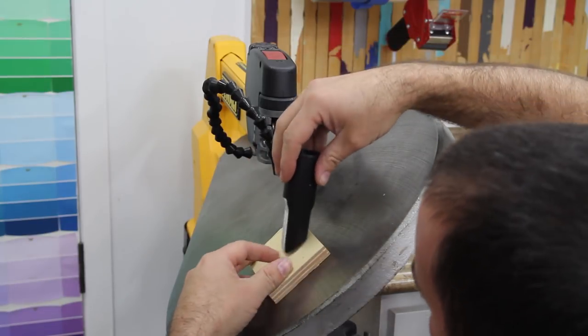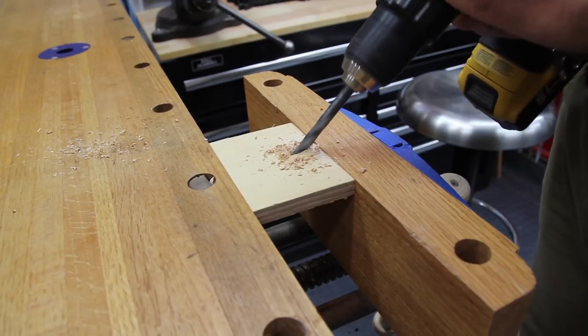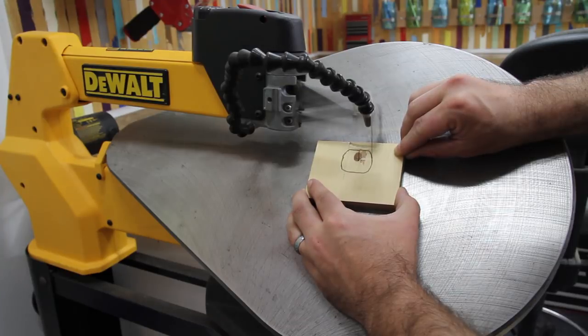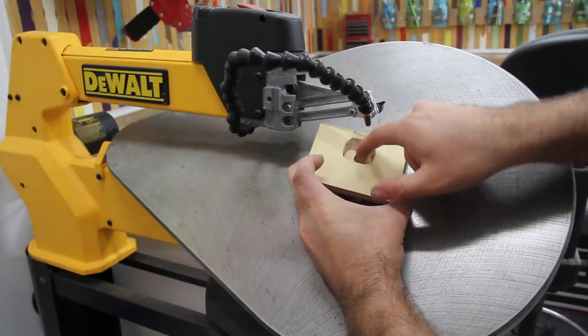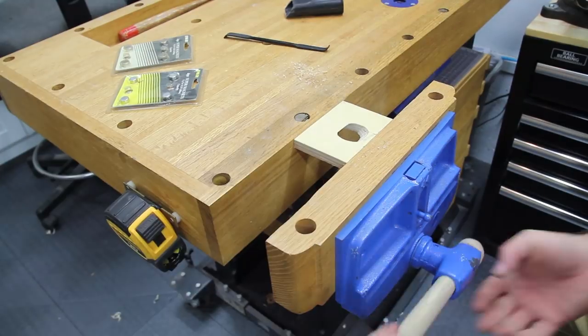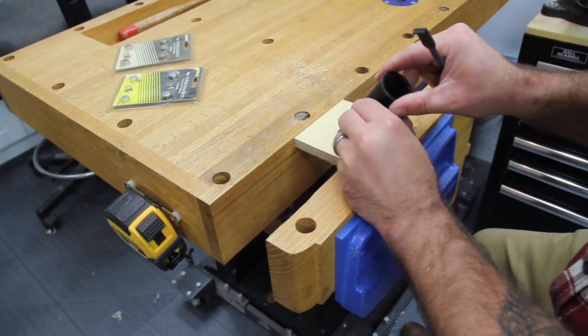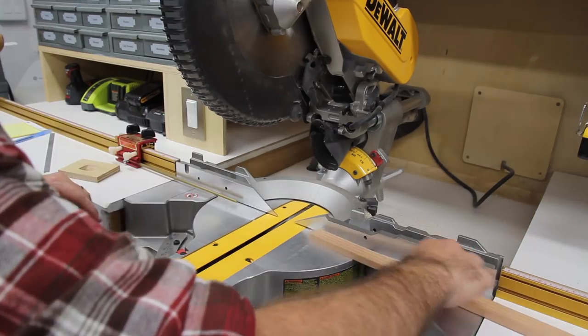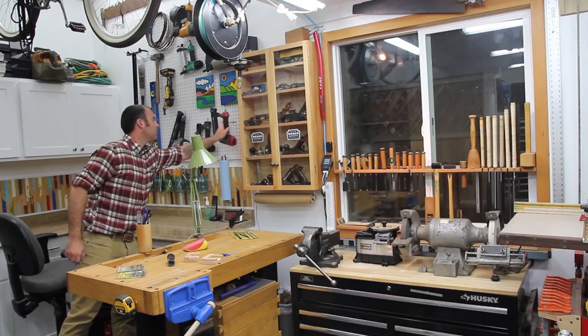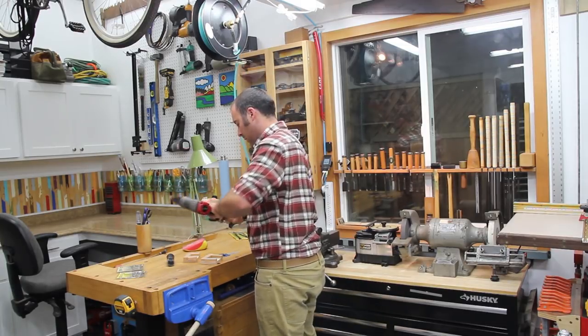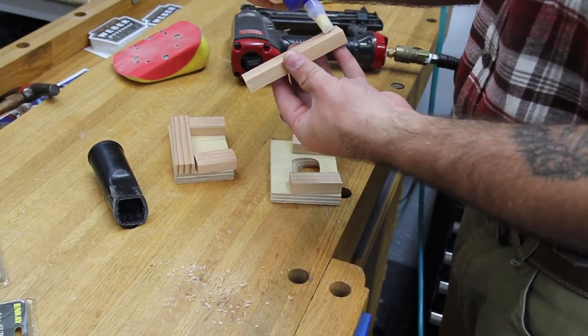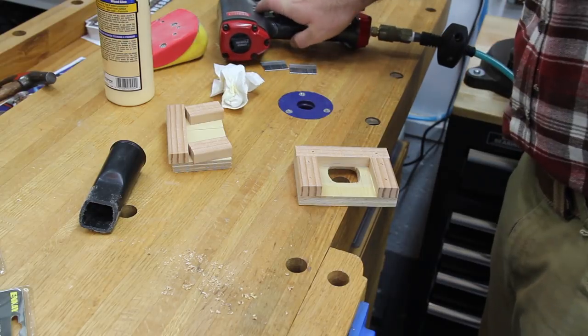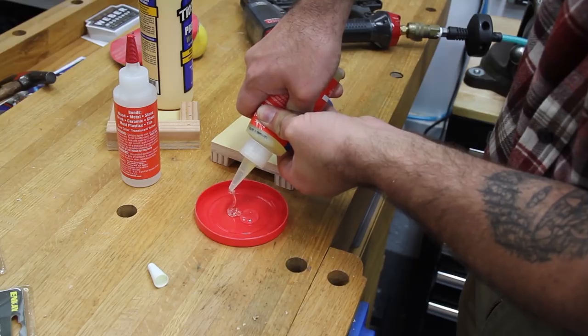I used my scroll saw to cut an angled hole for my homemade dust collection port to come through the plywood. And for the final fit I just used a rasp. These little scraps of wood will become the walls of my dust collector port. I just used some two-part epoxy to attach the plastic dust collector port to the wooden section.